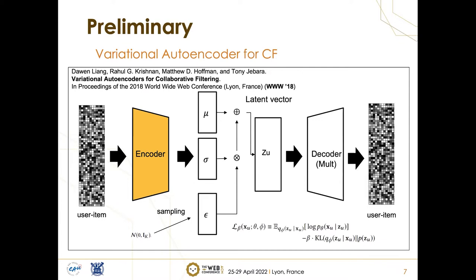The previous work, VAE for collaborative filtering, is the first work that applied VAE for recommender systems. The authors tested VAE on real-world datasets and achieved state-of-the-art results in 2018, highlighting the strength of neural approaches compared to previous probabilistic, machine learning-based models. For the decoder, researchers found that using a multinomial or softmax layer has better interpretation and better performance. It also introduced how to extend the ELBO by introducing a parameter beta, which controls the strength of regularization, and which is also used across following researchers in collaborative filtering.